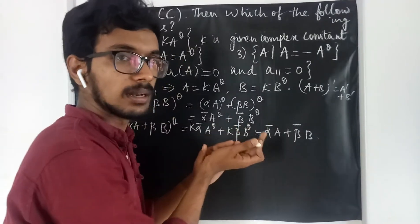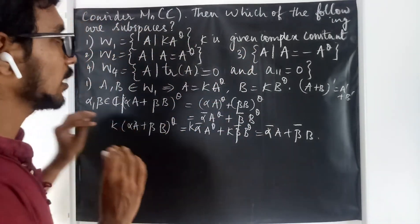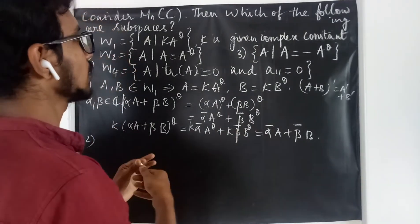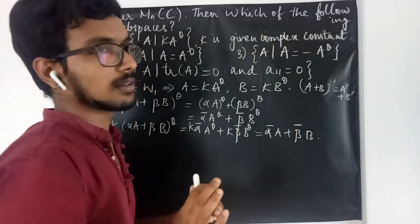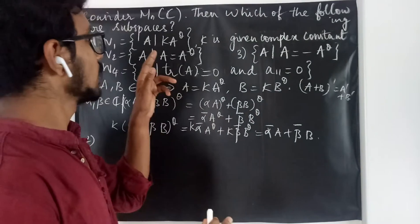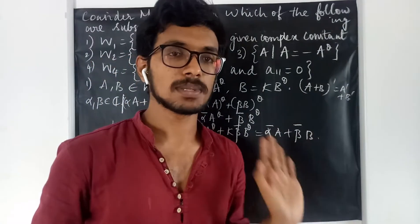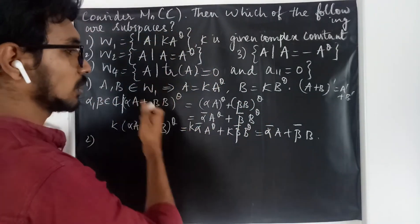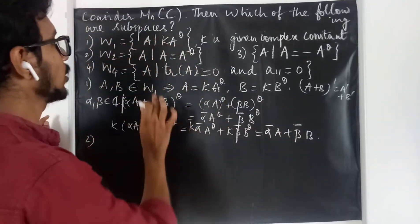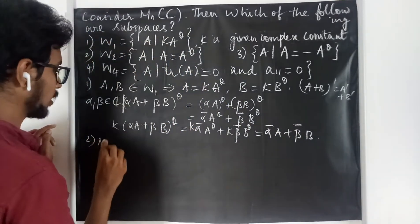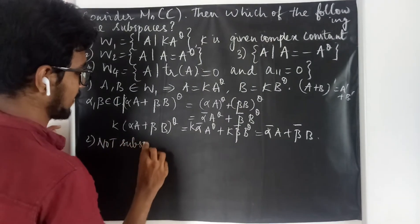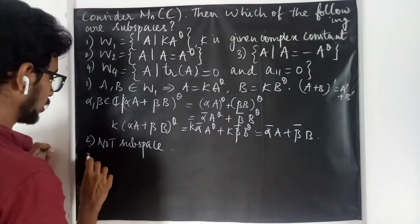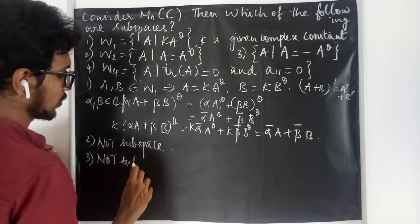Now to proceed with cases 2 and 3: K is a given complex constant that can be any complex constant. If we take K equal to 1, using the same arguments we get alpha-bar * A + beta-bar * B, so that is also not a subspace. When K equals minus 1, we get a third case, and therefore the third one is also not a subspace.